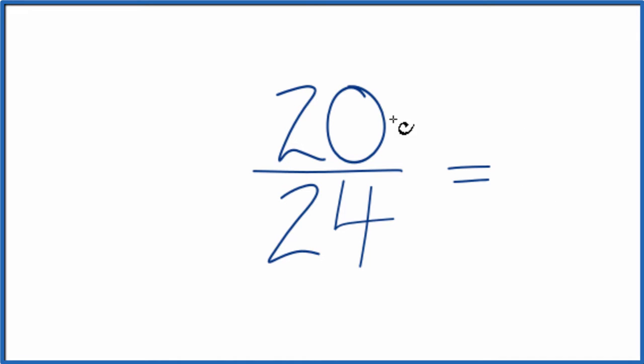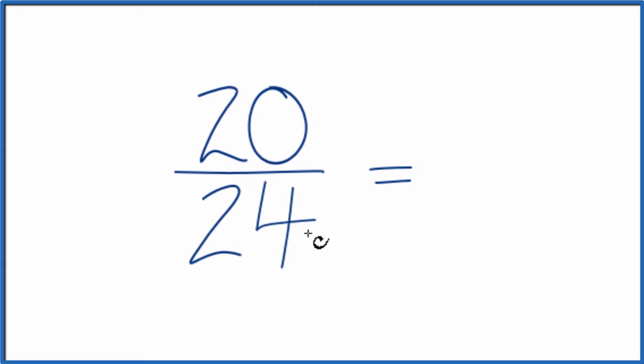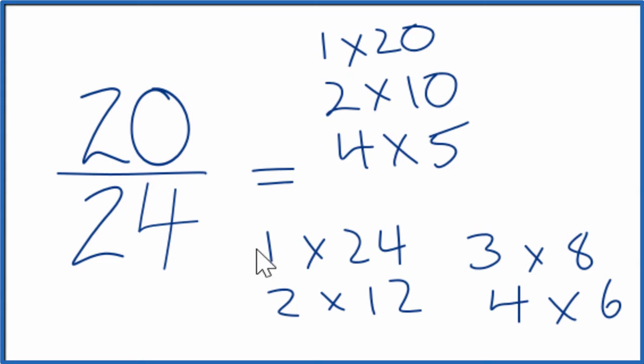So we're really looking for a factor that goes into 20 and 24. Let's just write the factors for 20 and 24. These are the factors for 20 and 24.